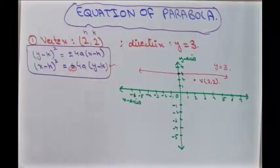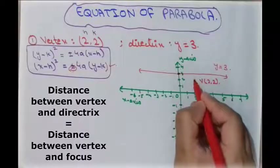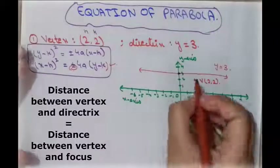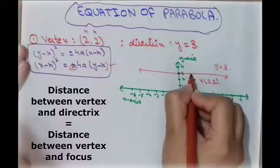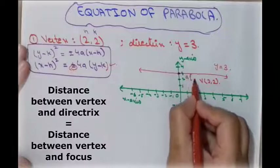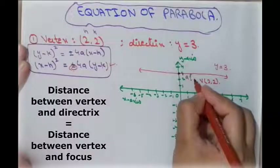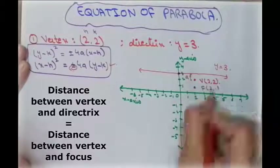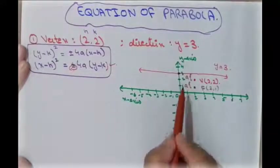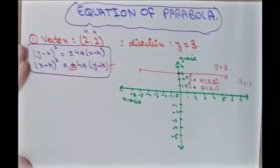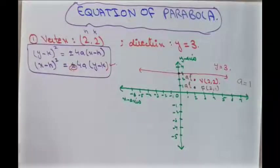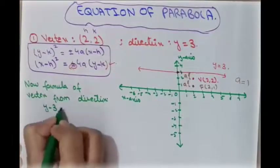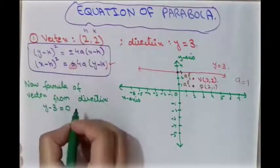The distance between the vertex and the directrix equals the distance between the vertex and the focus. If that distance is 'a', then since the vertex is (2, 2) and the directrix is y = 3, the focus point is (2, 1). We find the value of 'a' using the distance formula from a point to a line, written as y − 3 = 0, with vertex point (2, 2).